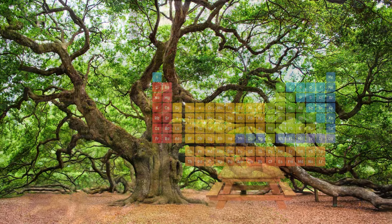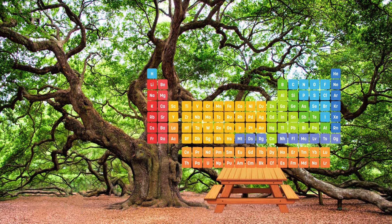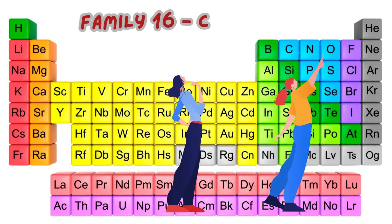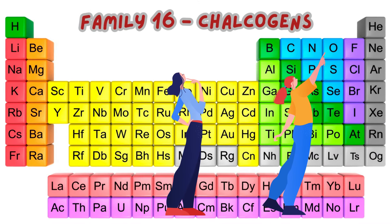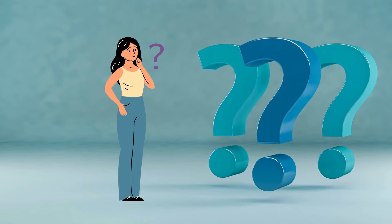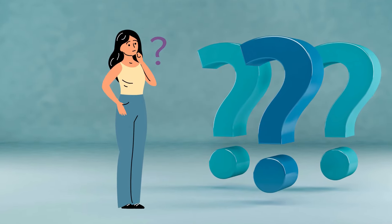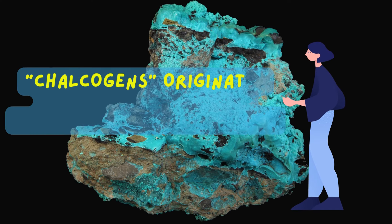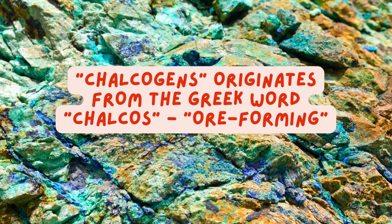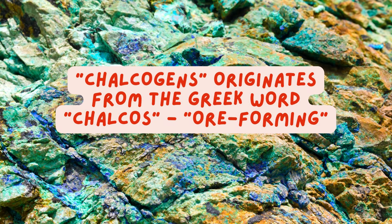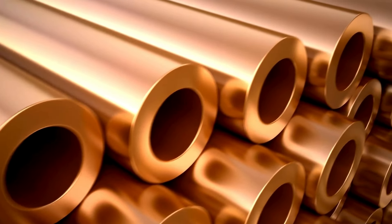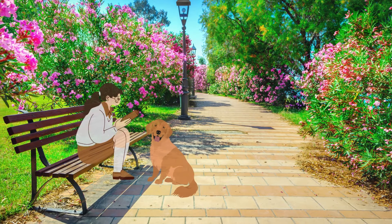Soon, we laid out the periodic table on a wide wooden table under an oak tree. Pointing to Oxygen, I said, 'Oxygen is in family 16, the Chalcogens.' Knitting her brows, Mole asked, 'Chalcogens?' Nodding, I replied, 'The word originates from the Greek word Chalcos, which means ore forming, since the elements in this family are found in the ores of copper. I was reading about it the other day.'